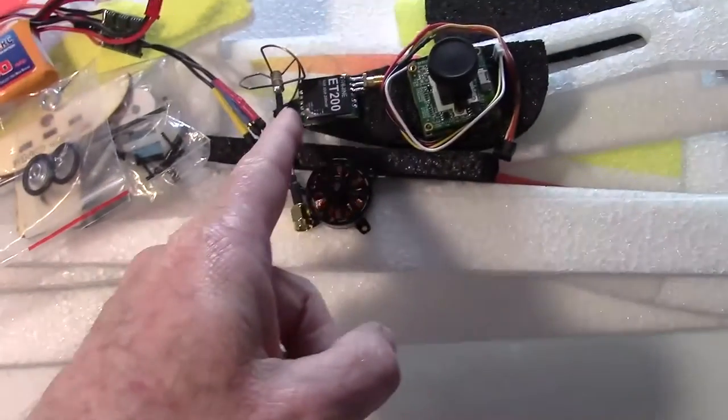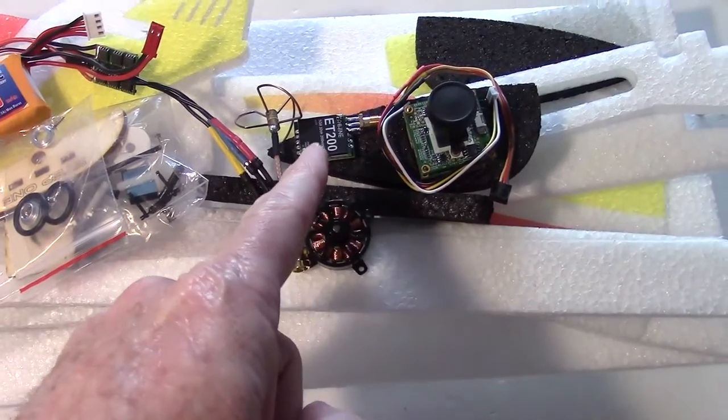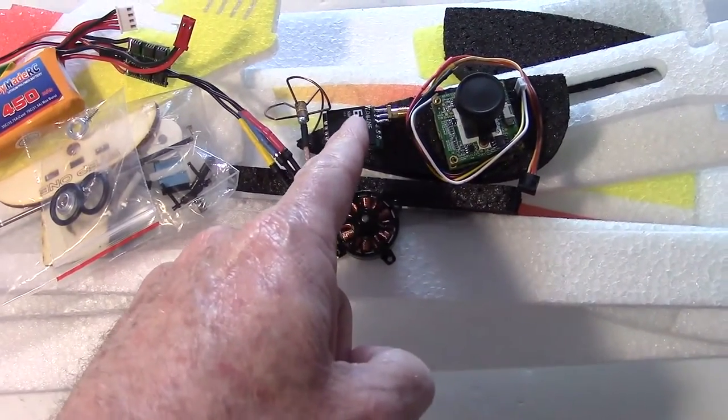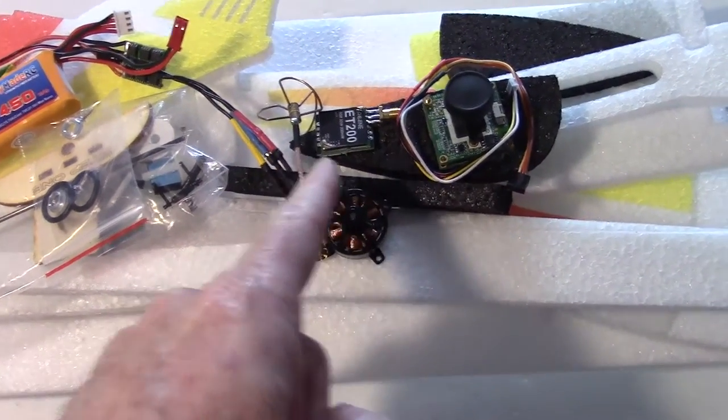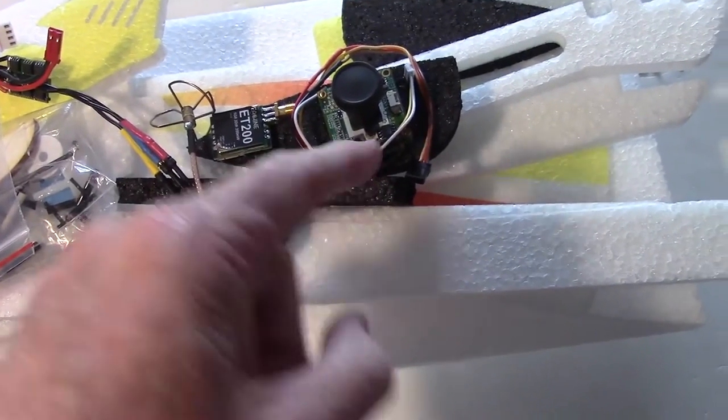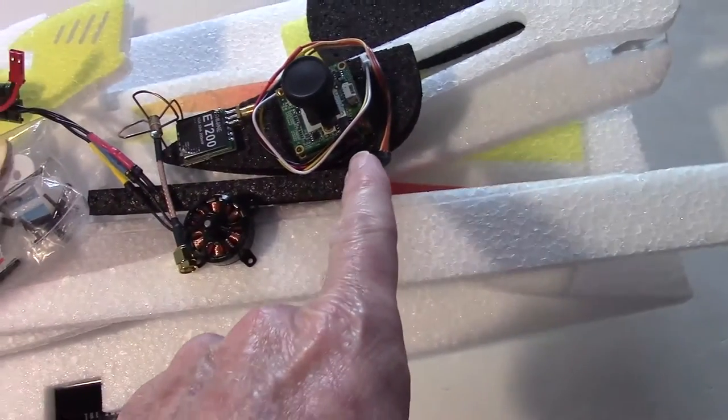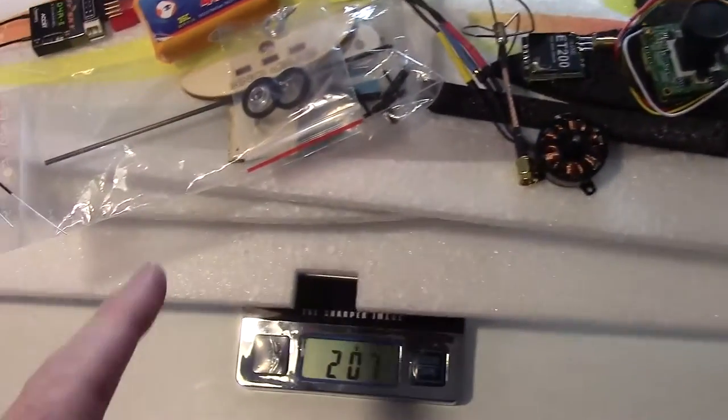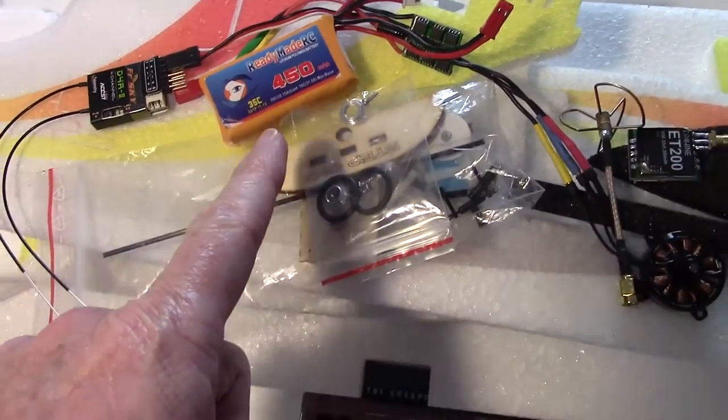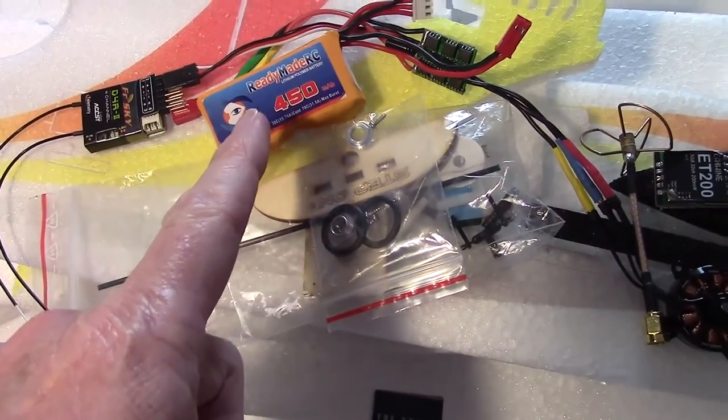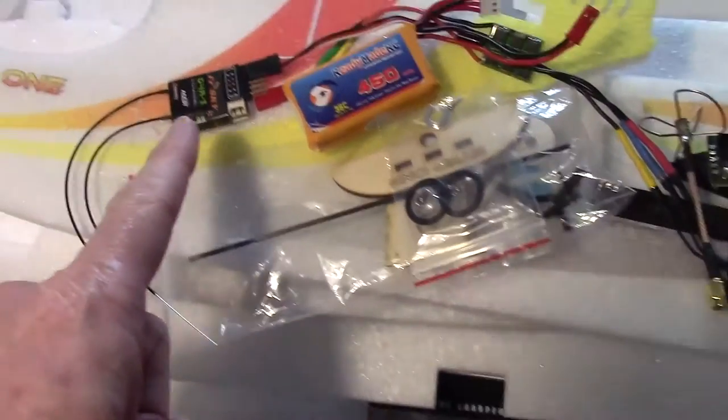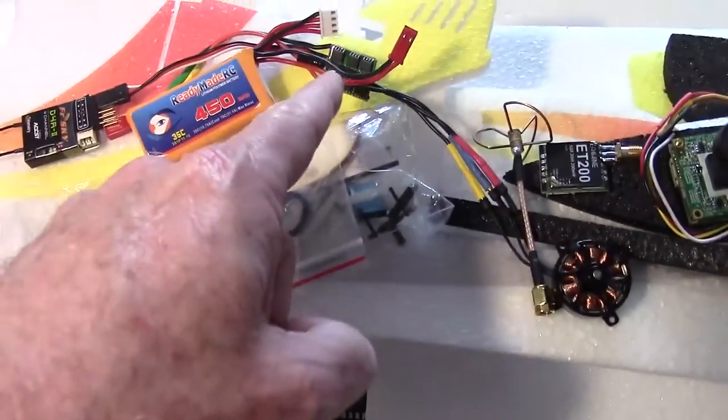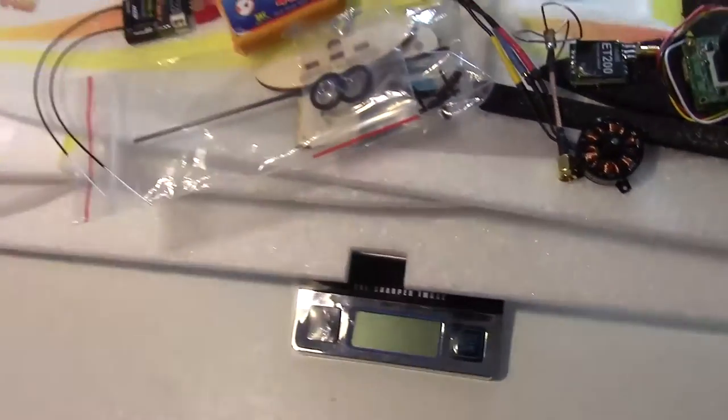I've also added in this all-up weight a video transmitter, video antenna, and BIDI camera which has HD recording capabilities, so that's like two cameras in one. I have a 450 milliamp hour three-cell battery, the receiver right there, and the ESC right here.